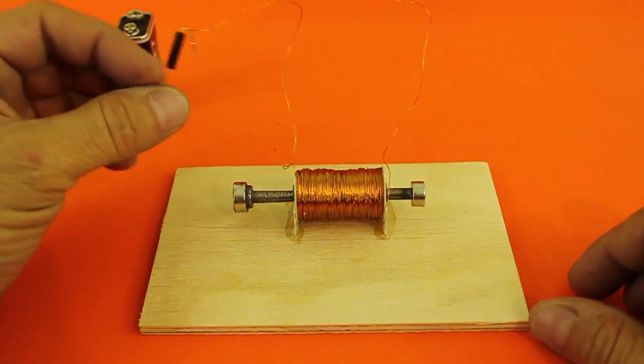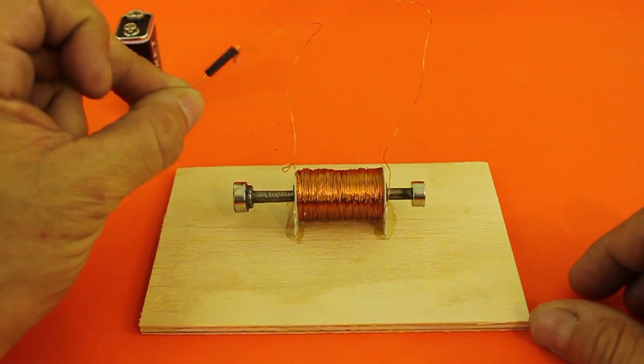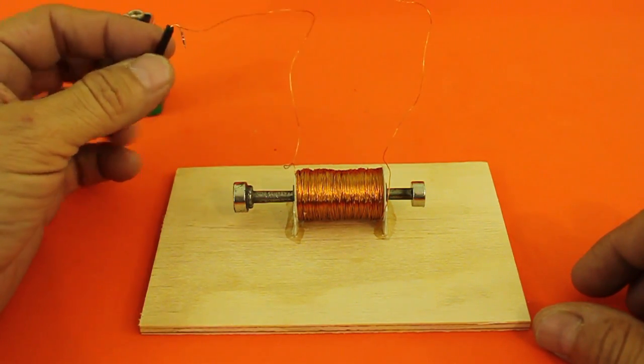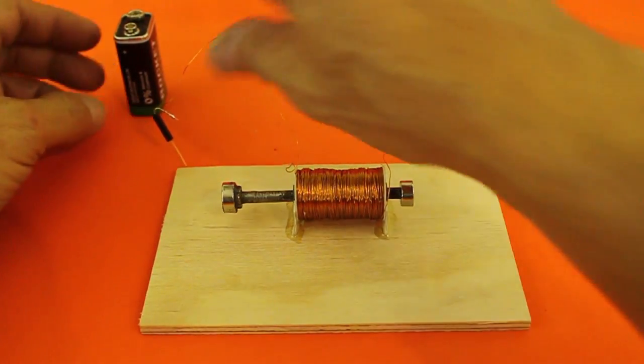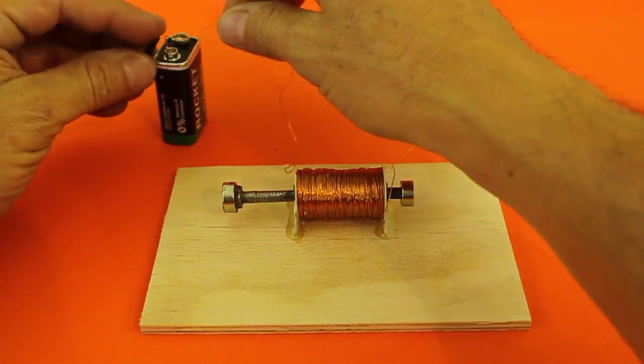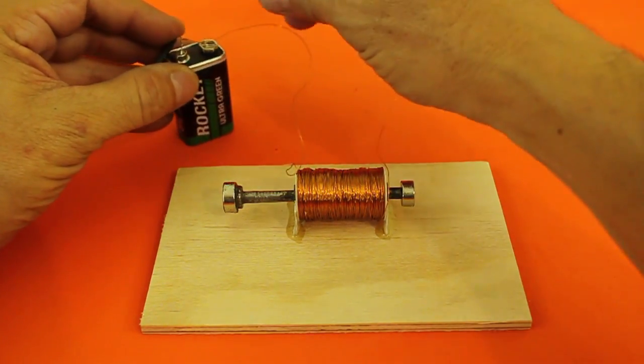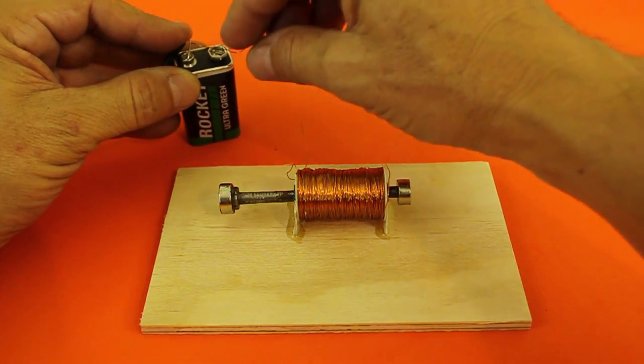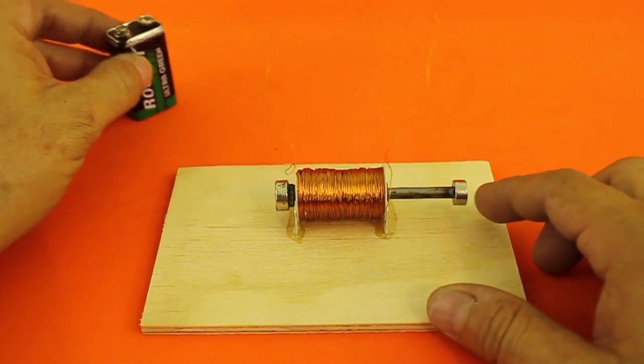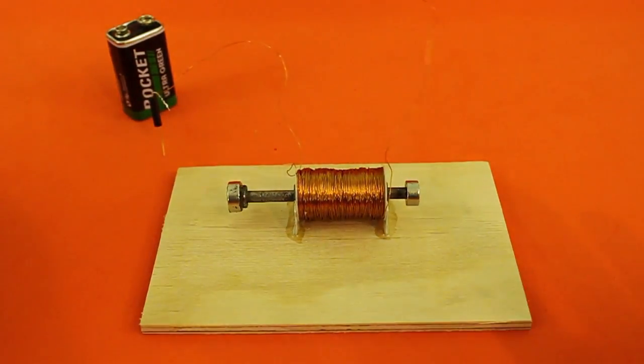Here I have a magnetic switch or reed switch, but let's forget about it for a moment. I'm going to connect the solenoid directly to the battery. You can see how the axis moves to the right.